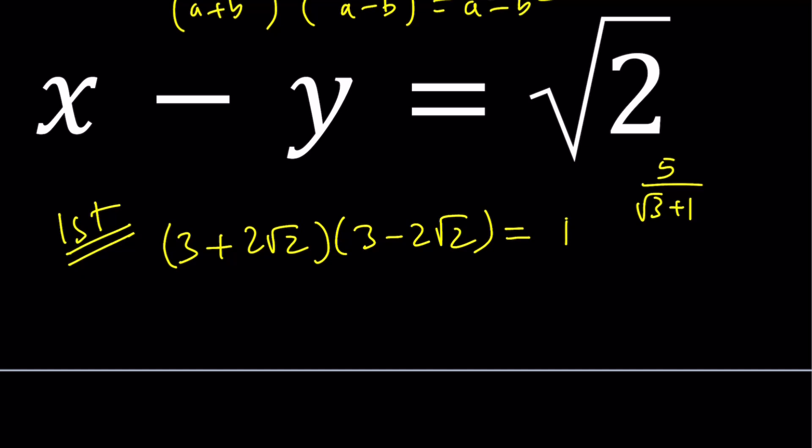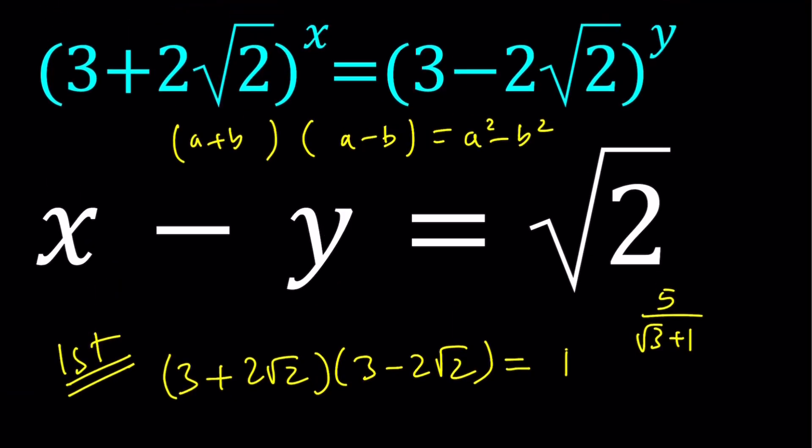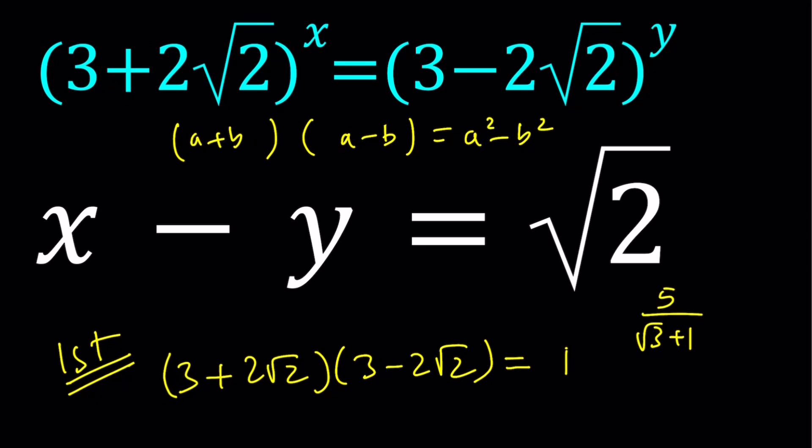Not only are these conjugates, they are also reciprocals. Why? Their product is 1. Think about it: 2 and 1/2, 2/3 and 3/2, their product is 1. They are reciprocals. So these are radical reciprocals.